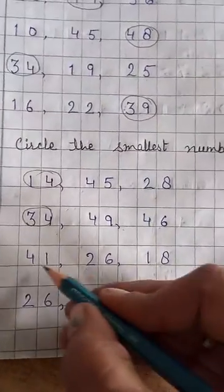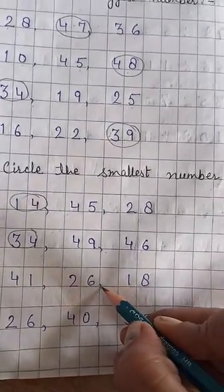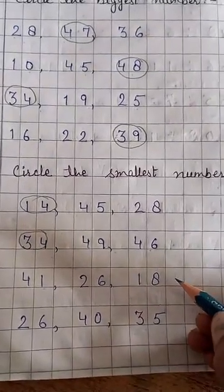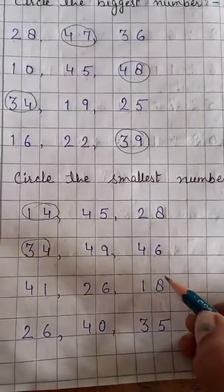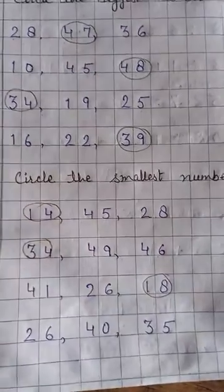The next one is 41, 26 and 18. Which one is the smallest? Yes, yes. Very nice students, 18. Now, circle the 18.